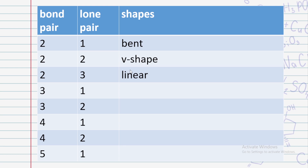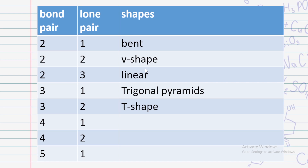Next: three bond pairs and one lone pair → trigonal pyramidal. Three bond pairs and two lone pairs → T-shape. These two are close — trigonal pyramidal and T-shape — but they are not the same. Trigonal pyramidal has one lone pair; T-shape has two lone pairs.